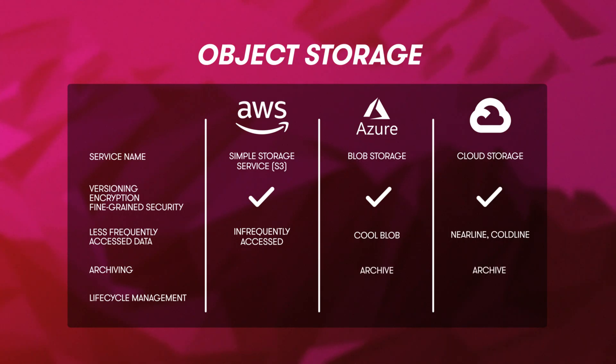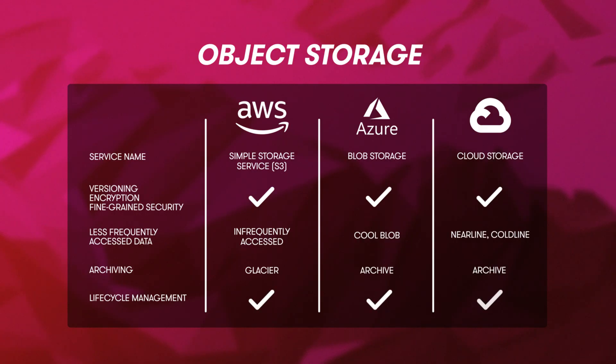Since we're talking about infrequently accessed data, we should also talk about archiving. Many organizations are required to hold onto their data for a certain amount of time for regulatory or legal reasons, and this can become very expensive. Cloud providers have stepped up with their own low-cost archiving solutions. Both Azure and GCP call their archiving solution Archive, while AWS is the odd one out by naming theirs Glacier. Fortunately, all providers also have storage lifecycle management built right into their object storage services, which can automatically delete expired objects without you having to do it manually.